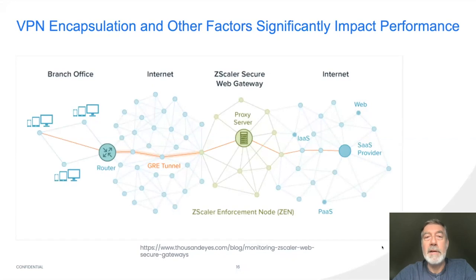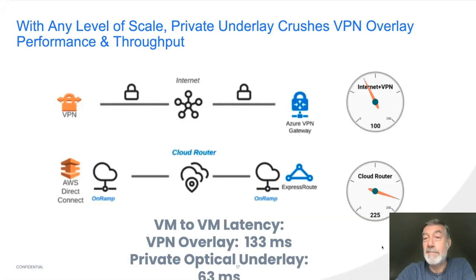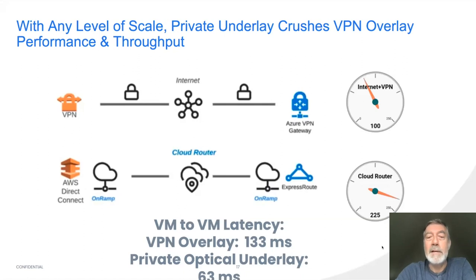But VPN encapsulation over the internet can impact performance. We set up a connection between two public clouds and used a Kafka pipeline to demonstrate what the goodput would be — the amount of good throughput for the application — over similar types of connectivity. One was a VPN connection over the internet, and the other was through our cloud router product on Packet Fabric. The VPN connection essentially added more latency and more variable latency that affected the application itself.